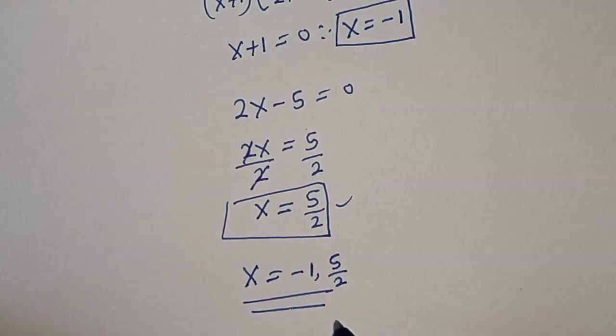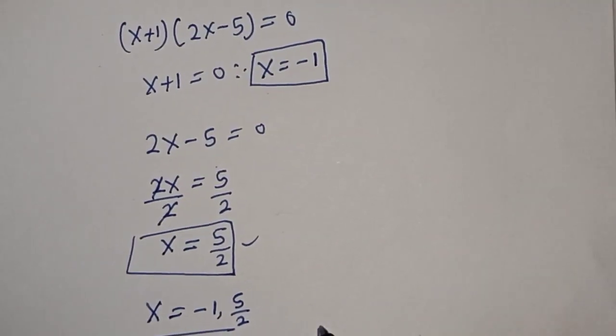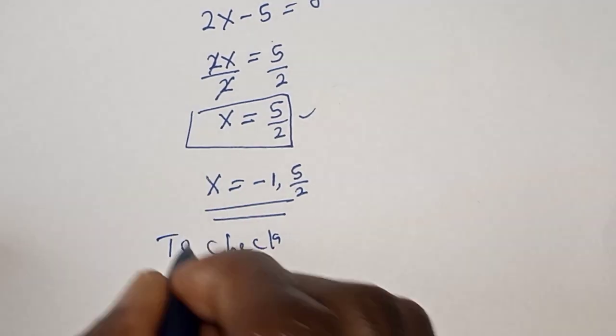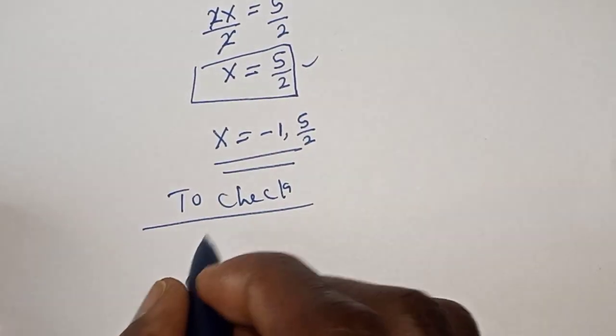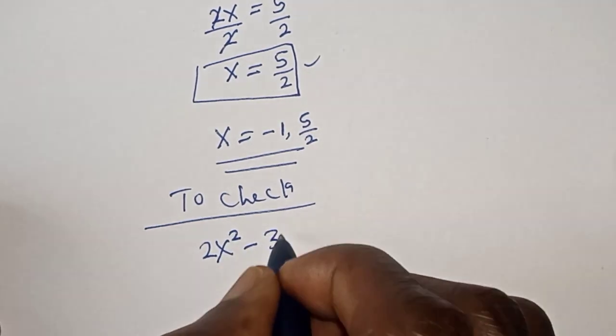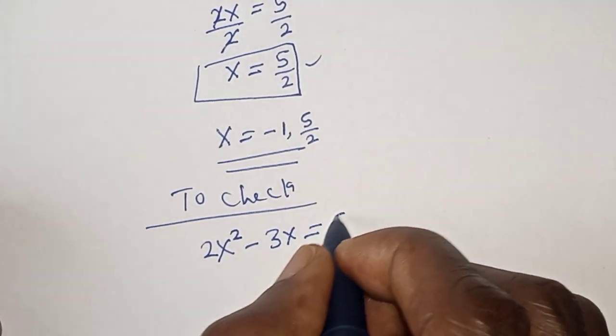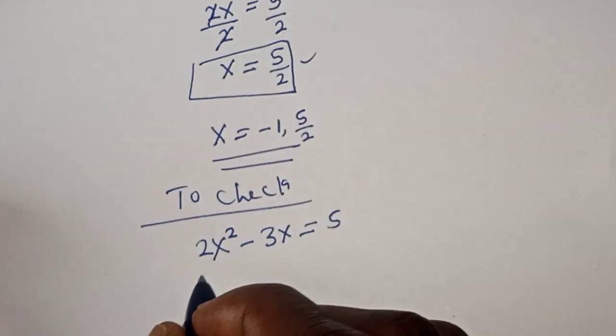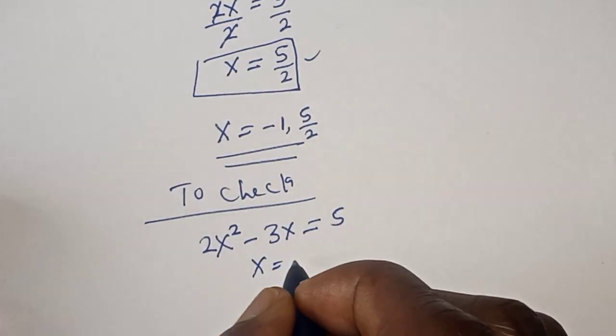We can check to confirm if our answer is right or wrong. To check, we have the given equation 2x² - 3x = 5. Now when x = -1: